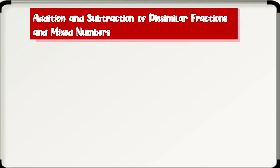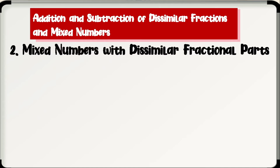Next, to add or subtract mixed numbers with dissimilar fractional parts, change the fractional parts to similar fractions by finding their LCD. Affix the whole numbers, then apply the rule in adding or subtracting similar fractions. Reduce the answer to lowest term.